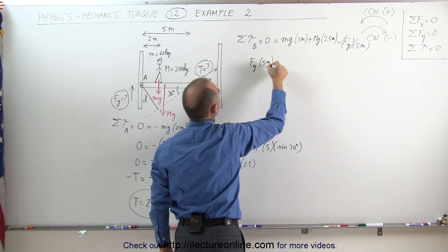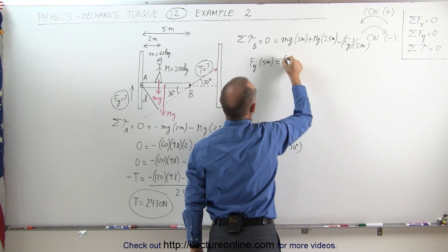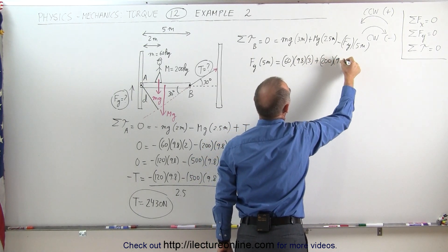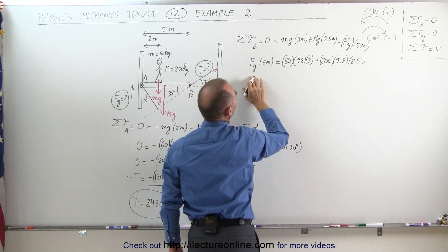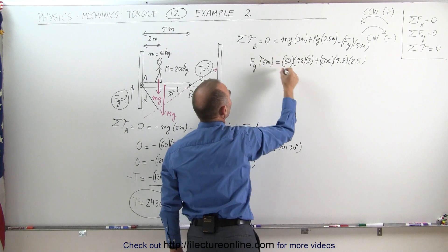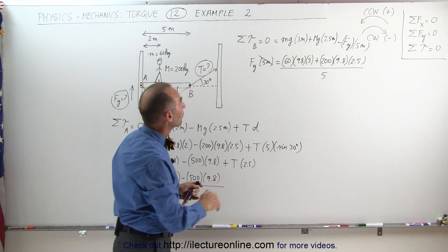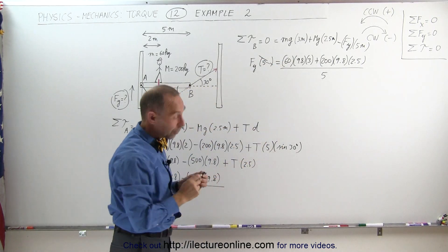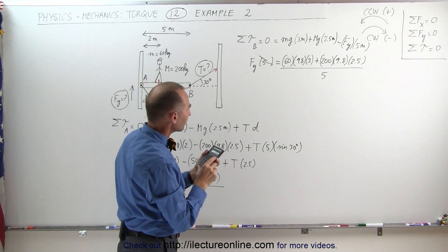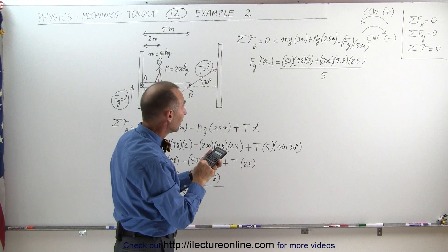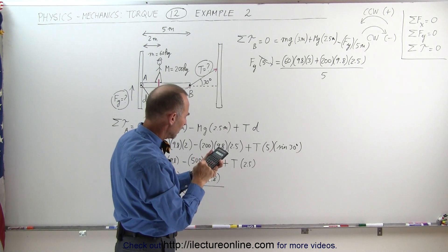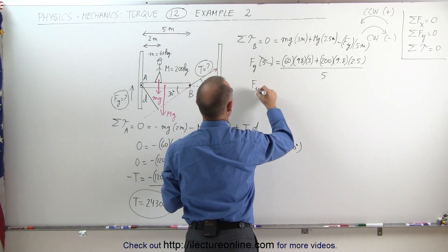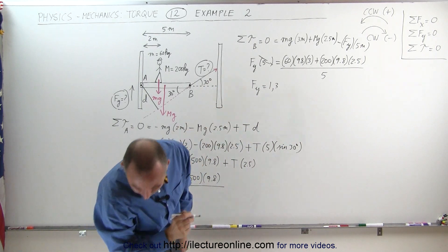Moving Fy to the left side: Fy times 5 equals 60 times 9.8 times 3, plus 200 times 9.8 times 2.5. Dividing both sides by 5, we get Fy equals (180 times 9.8 plus 500 times 9.8) divided by 5, which equals 1333 newtons. So the force at the hinge in the vertical direction is 1333 newtons.